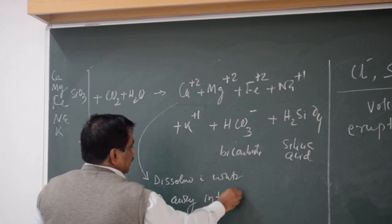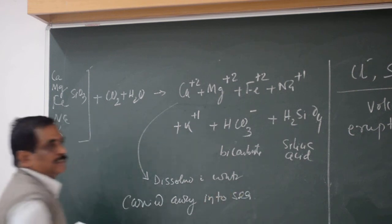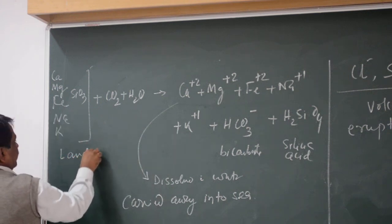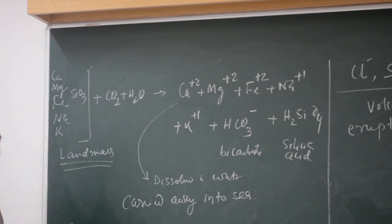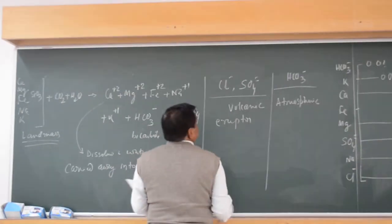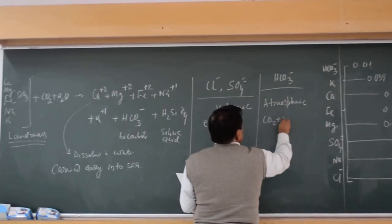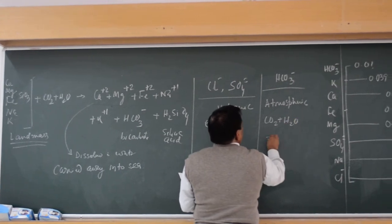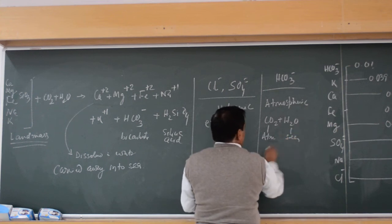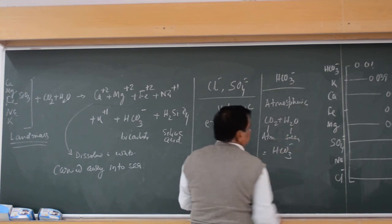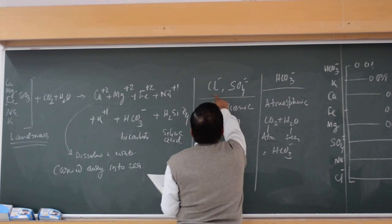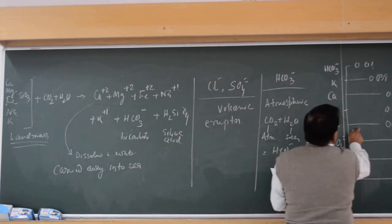These are the properties supplied by the landmass. Chlorine and sulfur are supplied by volcanic eruptions. And HCO3 comes from carbon dioxide plus water — carbon dioxide from the atmosphere reacting with water in the sea produces HCO3. All these ions contribute to the salinity of the water.